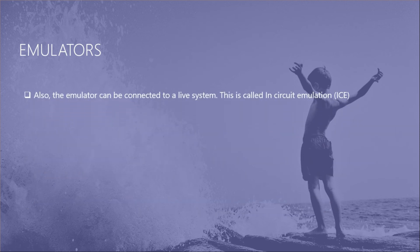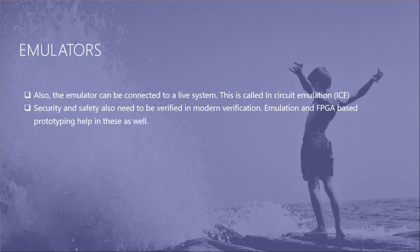You may have heard of in-circuit emulation, where an emulator is connected to a live system. That is not the same as the emulation we are discussing here. The emulation we are discussing happens during the design phase itself, before the product is manufactured. In-circuit emulation, by contrast, is used after the product is developed for debugging. In modern verification, it's not just the logic functionality that must be checked — safety and security of the design must also be verified, and emulation and FPGA-based prototyping help with these as well.